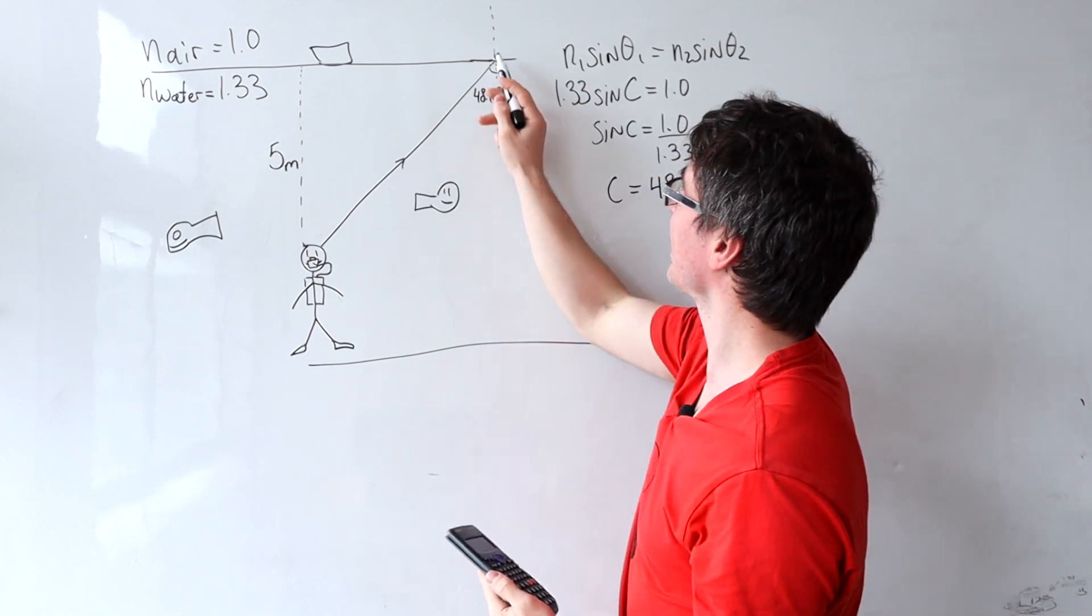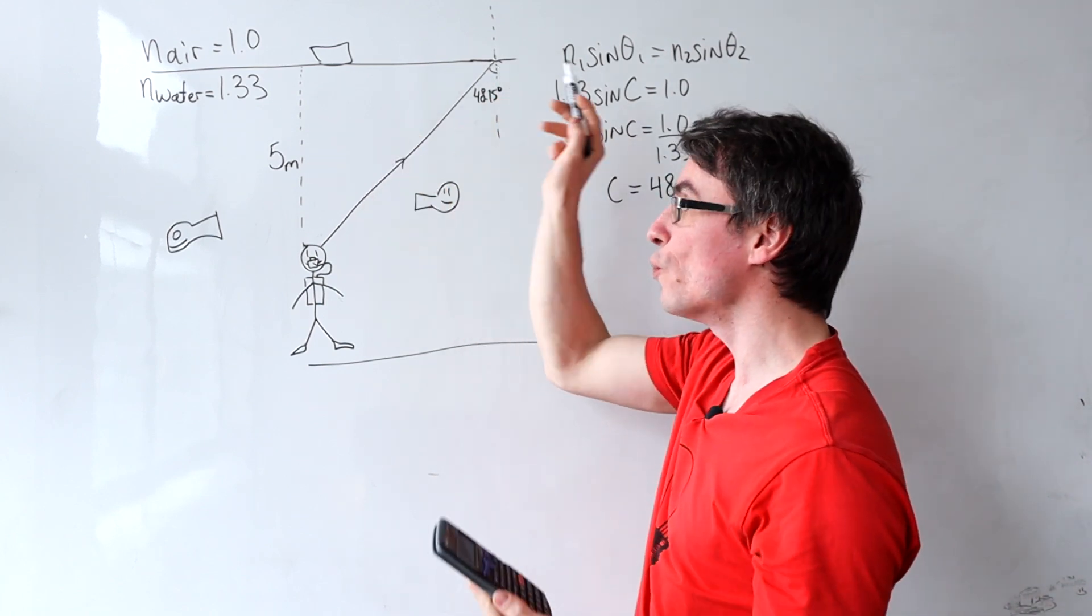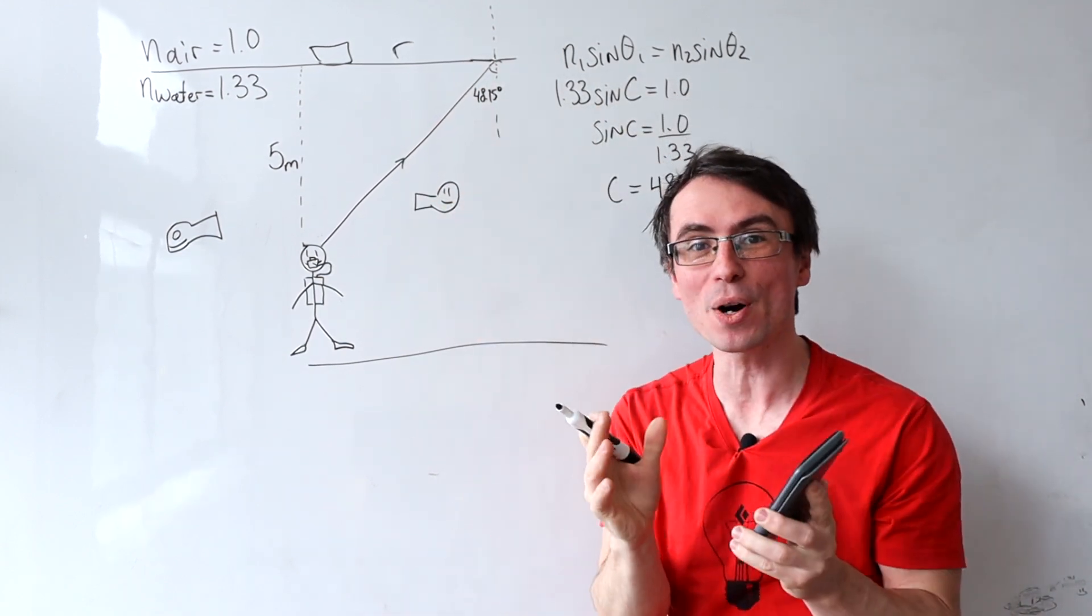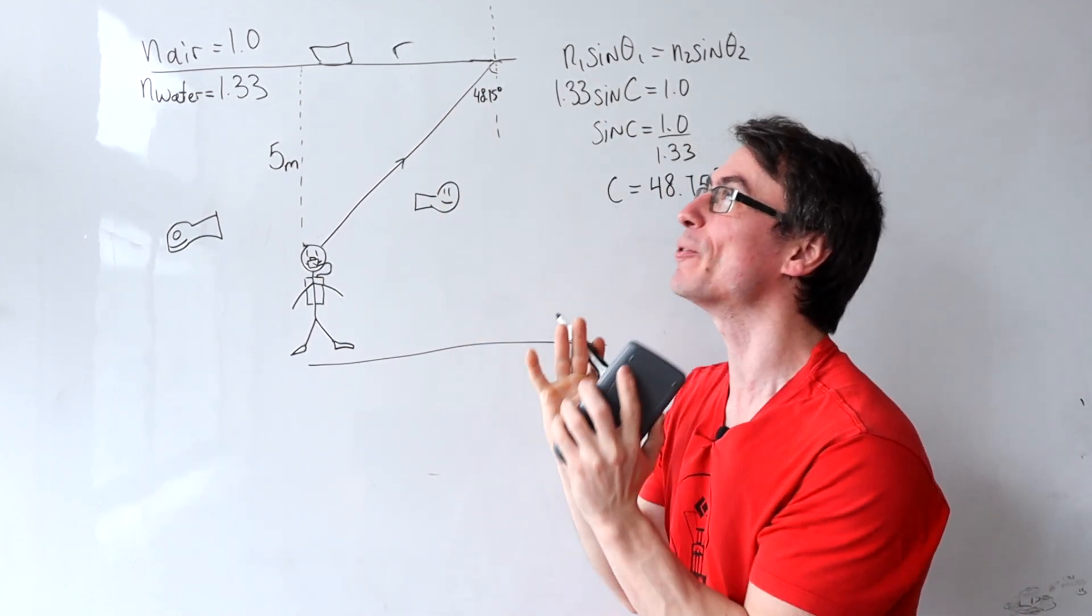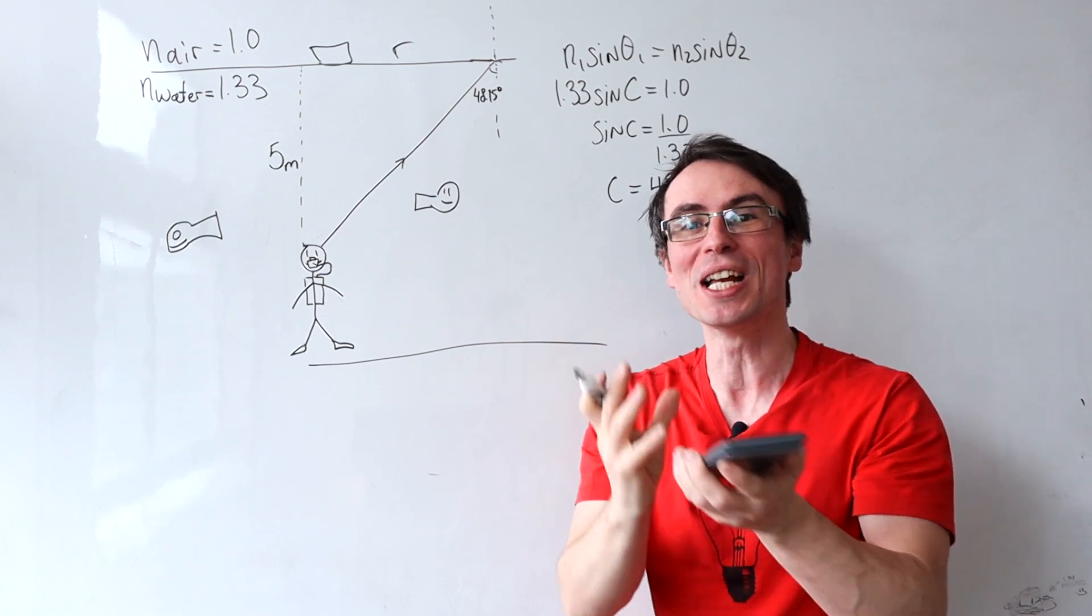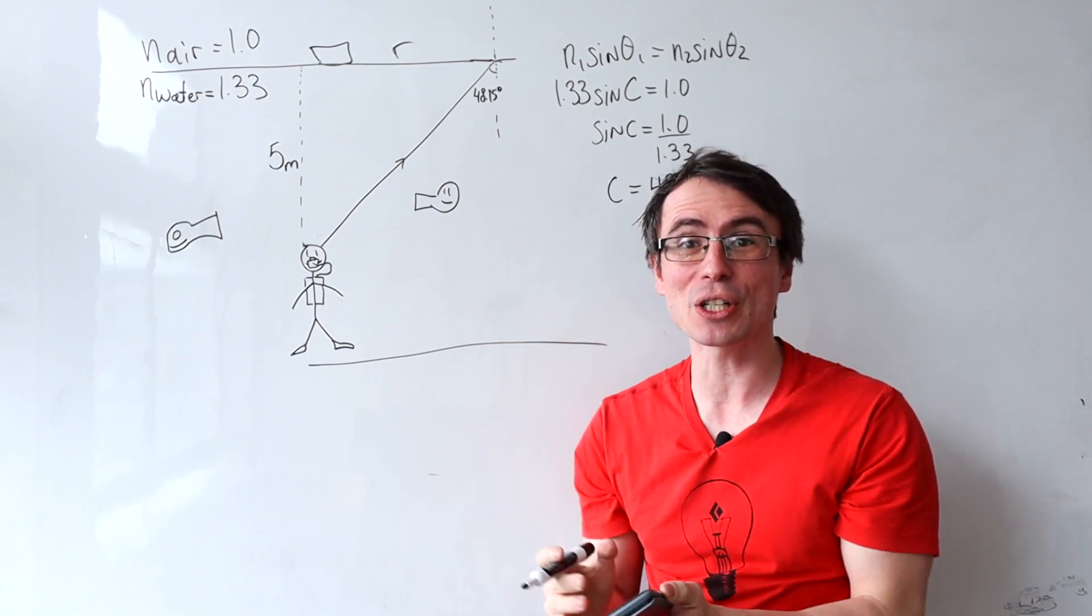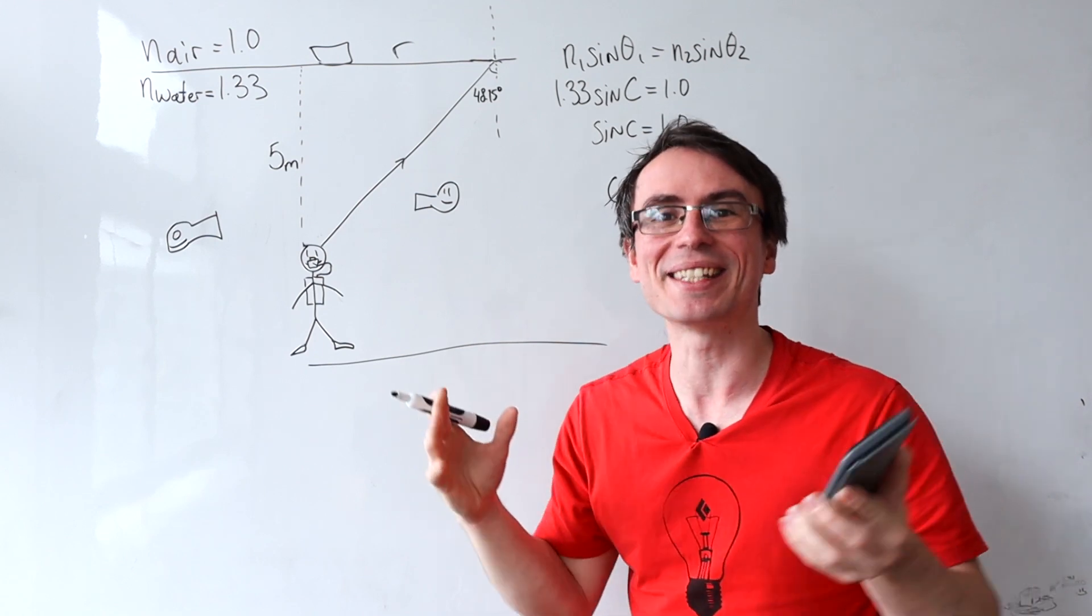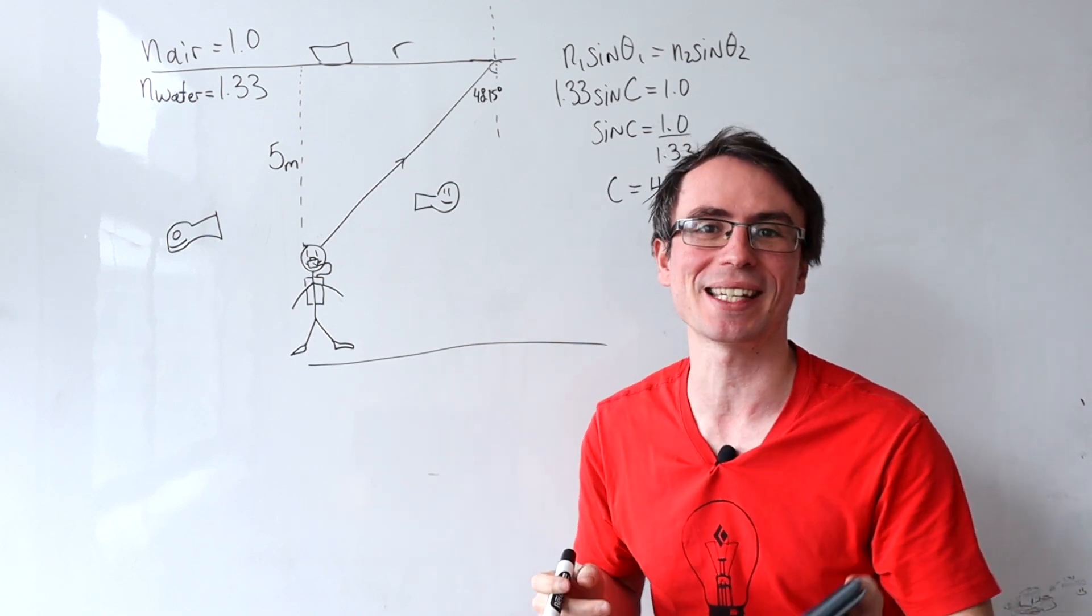In practice this means there's a radius of a circle R above the diver, and that's the window they will be able to see through. This is actually known as Snell's window. Let me know if there are any divers watching who have actually seen this phenomenon.